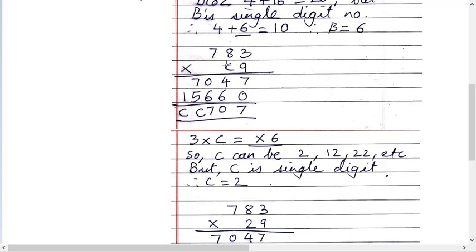I think that's first line gone. Now second line. C into 3. 3C. Now the answer is you get a 6.